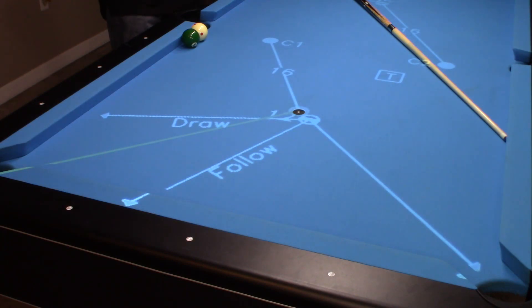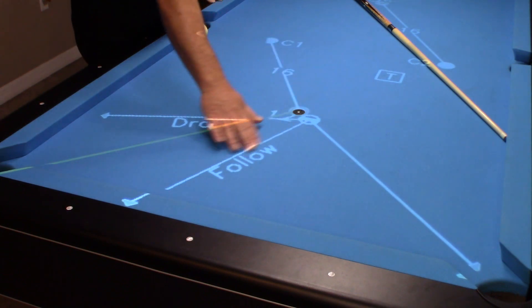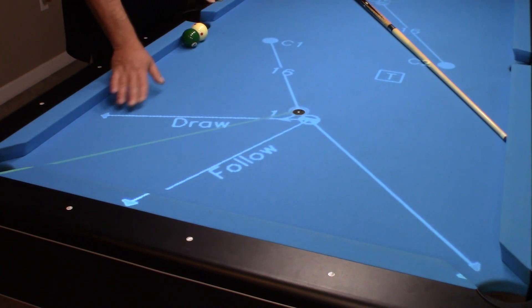And adjust your speed accordingly. Hit a little harder, hit a little softer and see what happens with the cue ball on the follow shot and do the same as the draw shot.